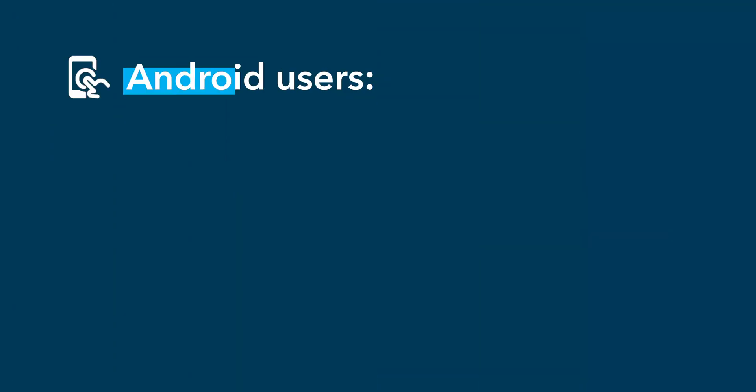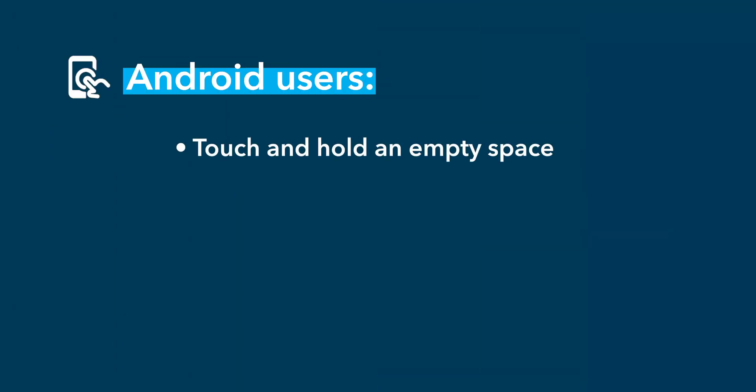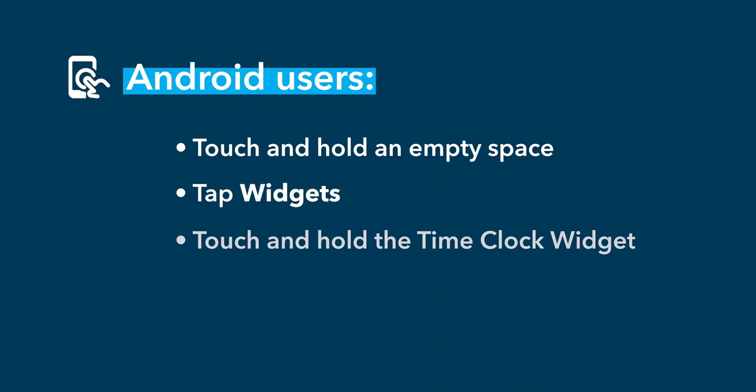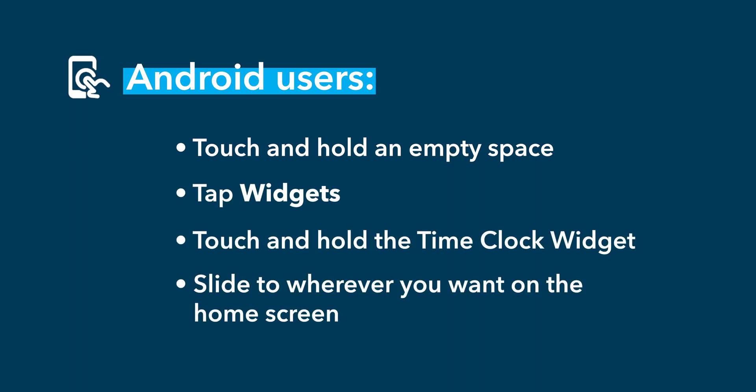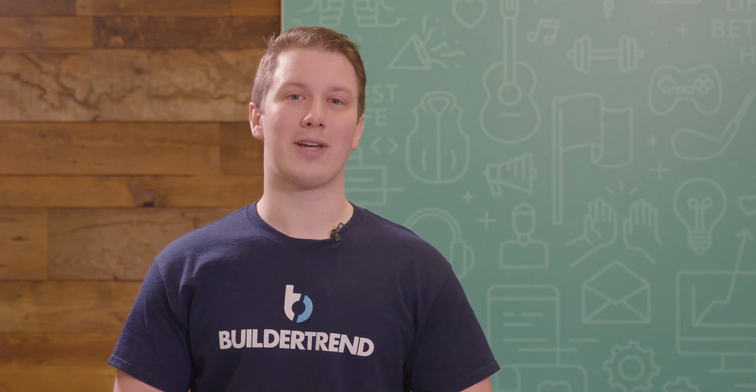For those using Android, touch and hold the empty space, tap widgets, touch and hold the time clock widget, and slide it to wherever you want on your home screen. It's that simple. Bottom line, this widget's a game changer. There's no better way to save time tracking time.